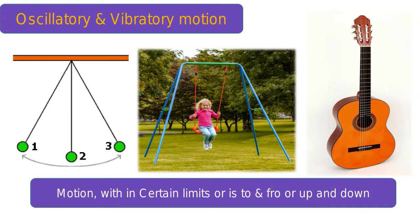The pendulum of a wall clock moves in a to-and-fro motion around a fixed point. A swing also moves in this manner. This type of motion, in which an object moves to and fro over a fixed period of time around a fixed point, is called oscillatory motion.